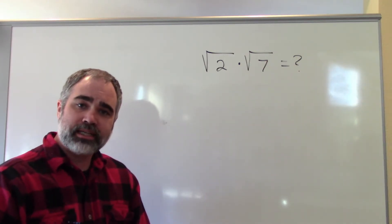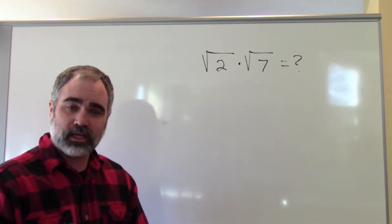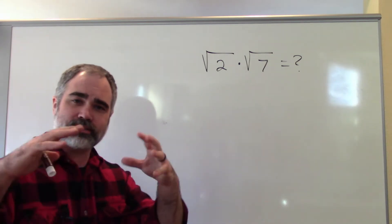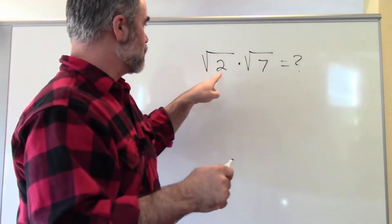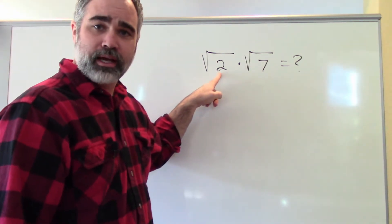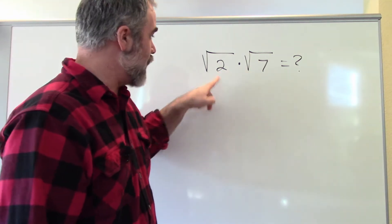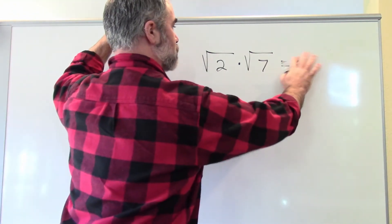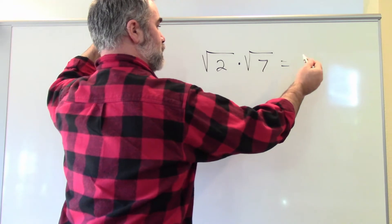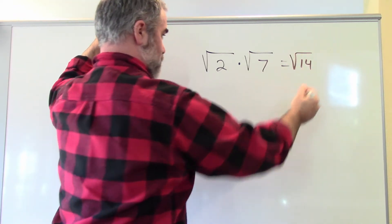When you're multiplying square roots together, you have to treat the square root as kind of its own thing. So I can multiply these, but what I'm gonna do is multiply the numbers inside the square root, and that's it. So you can multiply square roots together, no big deal. And so this would be equal to the square root of 14.